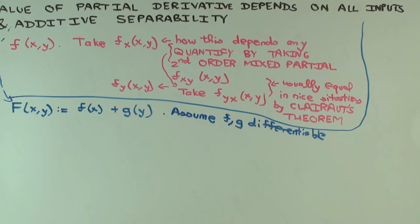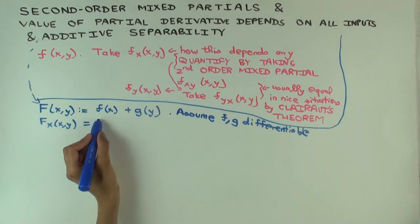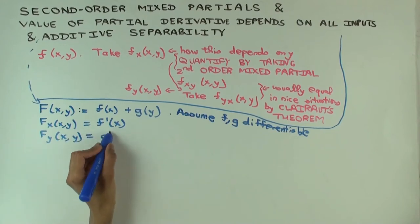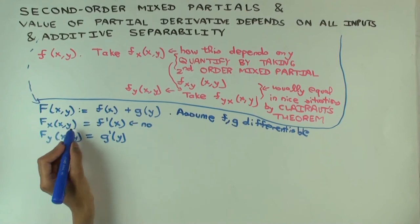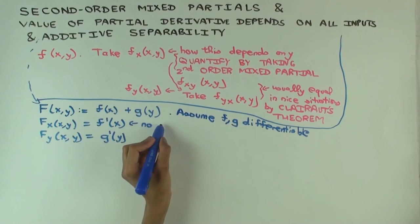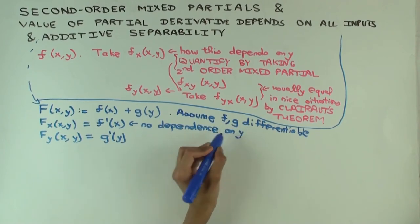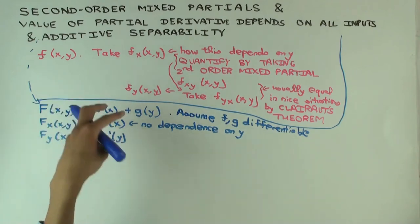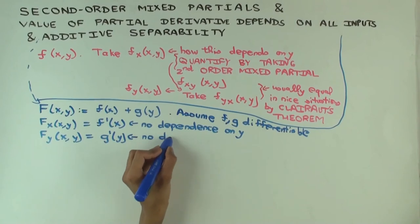And now I want to show you what happens when you take the first order partials. What is capital F sub x of x comma y? f prime x. Little f prime x. What is capital F sub y of x comma y? G prime y. Now what do you notice? Little f prime x doesn't depend on y. So that means that the value of this, value of capital Fx at any pair x comma y just depends on the x coordinate. So this is sort of a counter example to the assertion that the partial derivative should depend on both inputs.